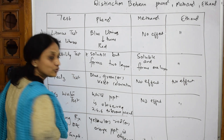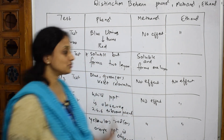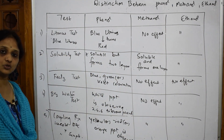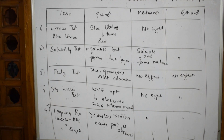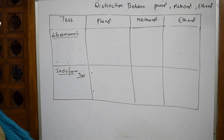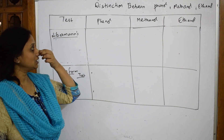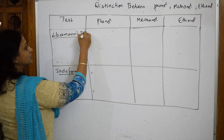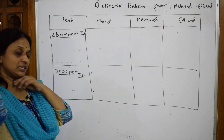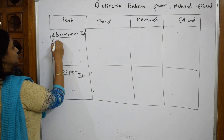For methanol and ethanol in the coupling reaction, there is no effect. These are the distinguishing tests so far. Now let's do the next two: Liebermann's test. In Liebermann's test, take the sample — phenol, methanol, or ethanol — and add concentrated H₂SO₄ and sodium nitrite (NaNO₂) to it.